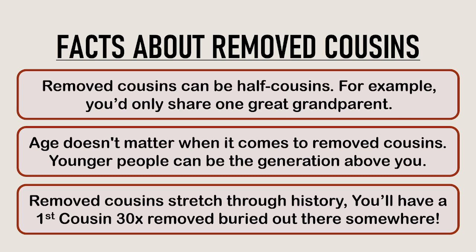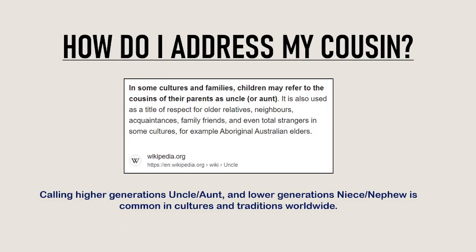Removed cousins stretch through history — you'll have a first cousin 30 times removed buried somewhere out there. Your first cousin 30 times removed could actually be Henry VIII. As for how to address your cousin, this is an extra note for people who don't know how to address their parents' first cousins. Calling higher generations uncle or aunt and lower generations niece or nephew is common in cultures and traditions worldwide. If you're struggling to describe your first cousin twice removed to someone, it might be easier to call them an uncle or aunt.